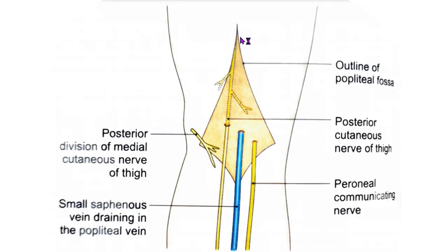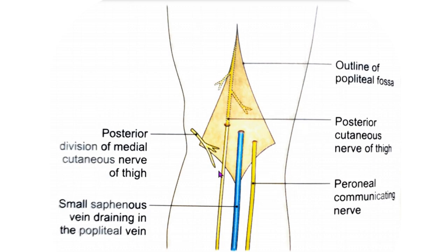The roof of the popliteal fossa is formed by the deep fascia or the popliteal fascia. The superficial fascia over the roof contains the small saphenous vein and the cutaneous nerves. The three cutaneous nerves are the posterior cutaneous nerve of the thigh, the peroneal or sural communicating nerve, and the medial cutaneous nerve of the thigh — specifically the posterior division of the medial cutaneous nerve of the thigh.